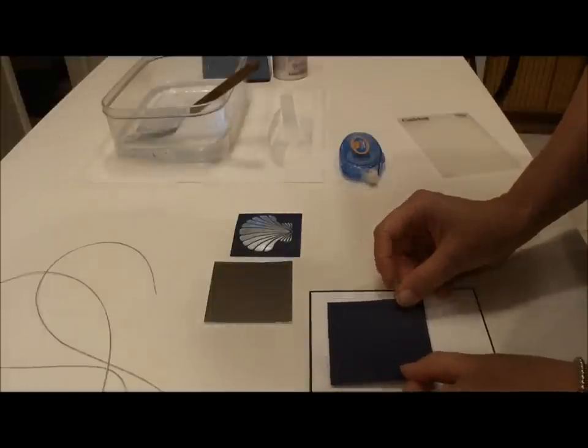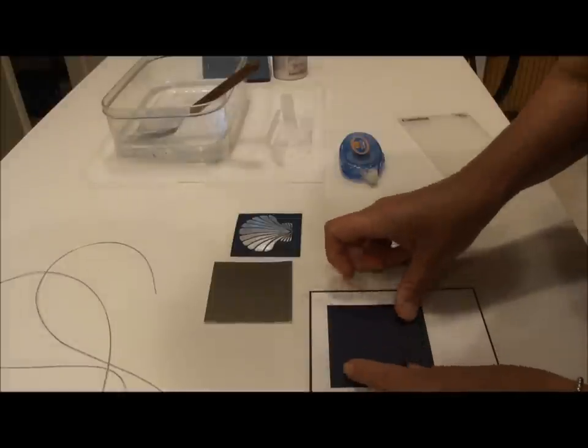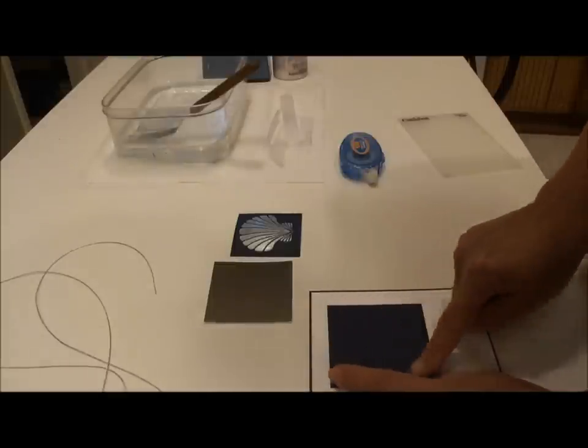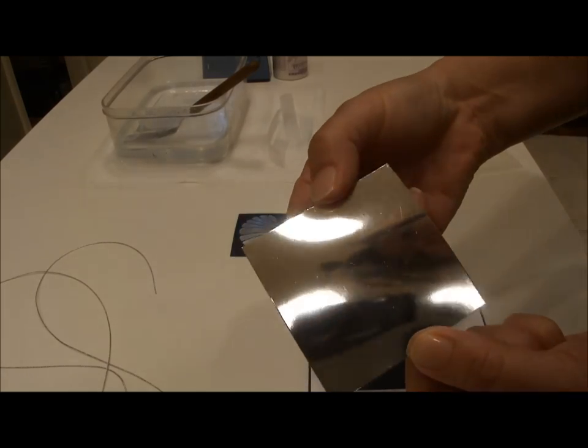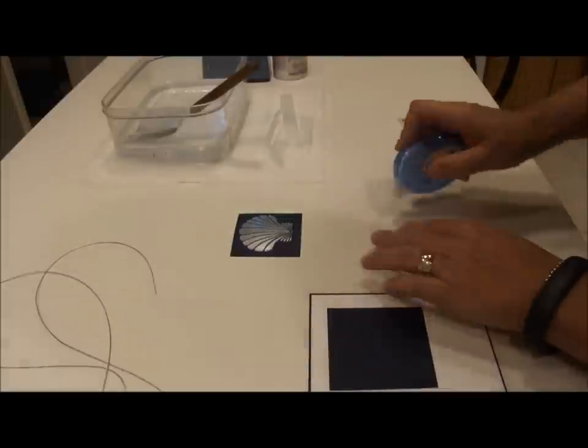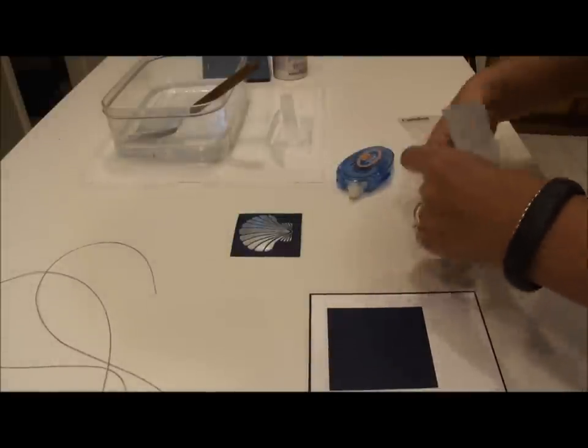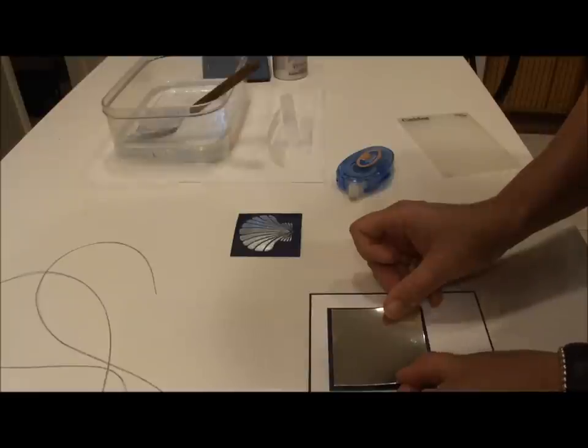And I'm making sure that I have equal amounts of white on left, right, and the top. I'm actually going to center the scalloped shell towards the top of the card. Next, I'll put the silver, metallic silver mirror paper. And same thing, I want to make sure I have equal parts of dark navy cardstock left, right, top, and bottom.